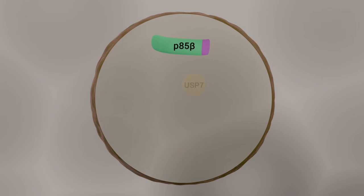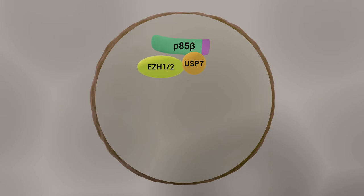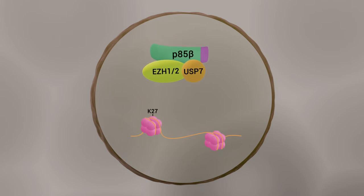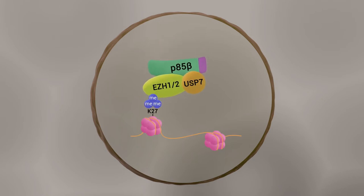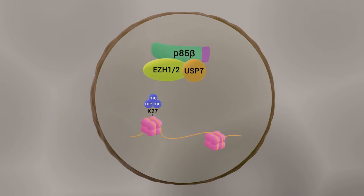The nuclear P85 beta recruits USP7 to stabilize histone methyltransferases EZH1 and EZH2, and enhances histone H3 lysine 27 trimethylation.